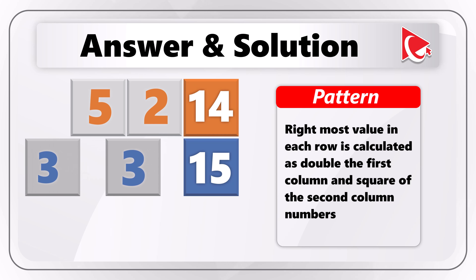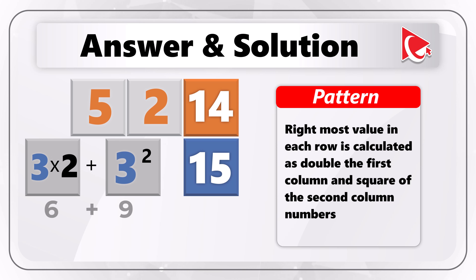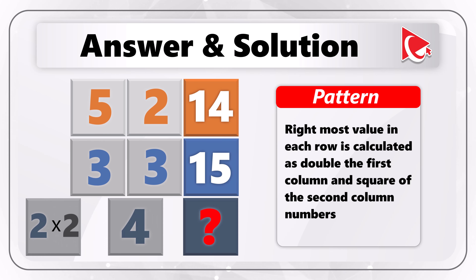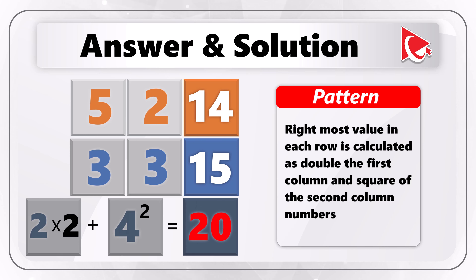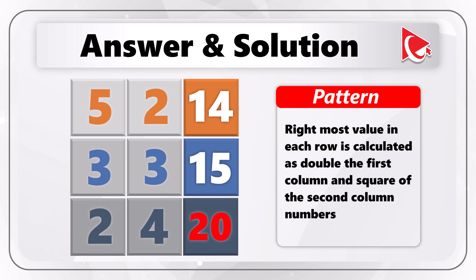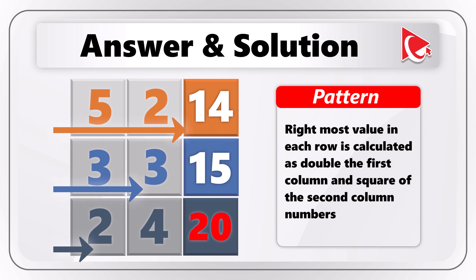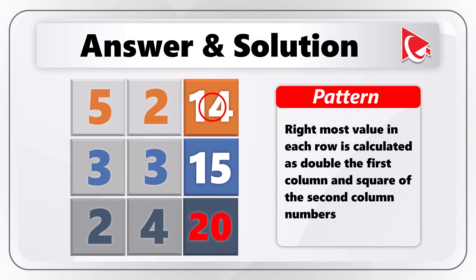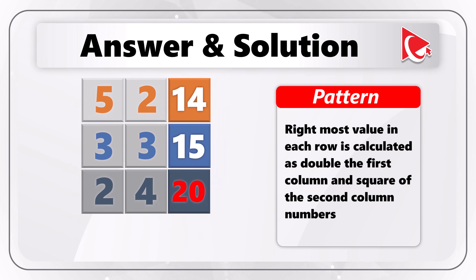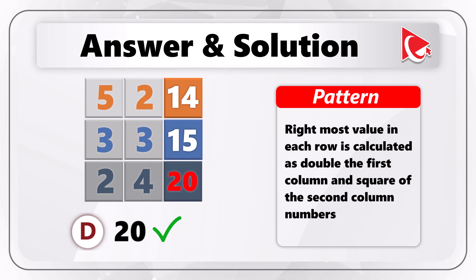For the second row, the calculation is 3 multiplied by 2 plus 3 squared, which equals 6 plus 9, with an end result of 15. So for the missing value, the calculation is 2 multiplied by 2 plus 4 squared, which equals 4 plus 16, and the end result is 20. The flow of colors shows the flow of the calculations — 2 and 2 are initial numbers and 14 is the calculated number in the first row. So the correct answer here is choice D: 20.